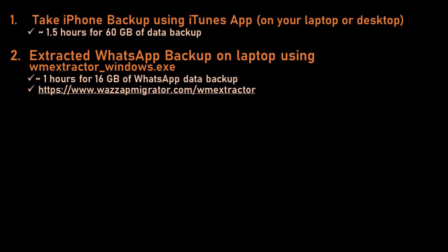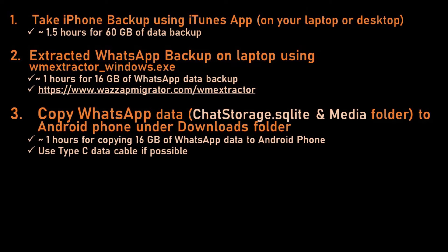The utility can be found at https://www.whatsappmigrator.com/wmextractor — the link can also be found in the description below. I then copied the WhatsApp database file chat-storage.sqlite and the media folder to my Android phone, which took about 1 hour using a Type-C cable.